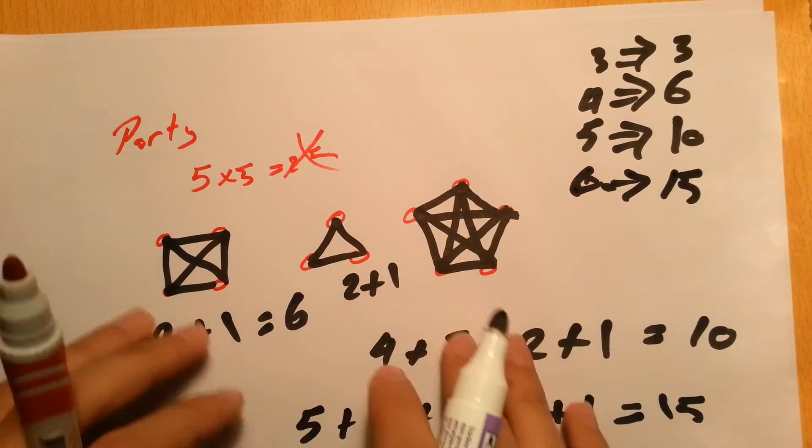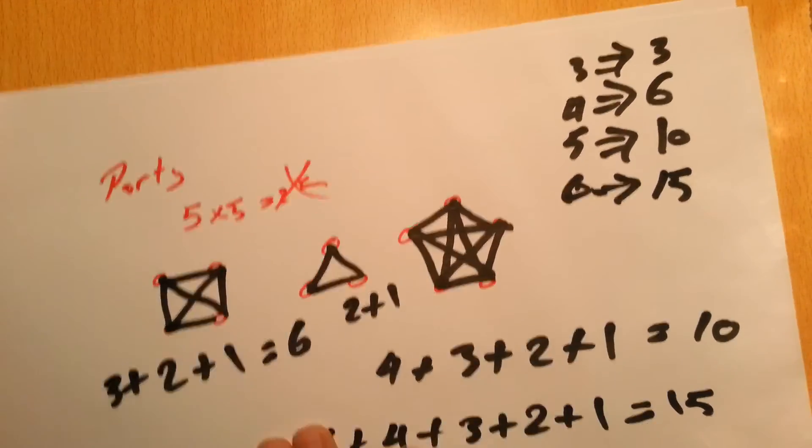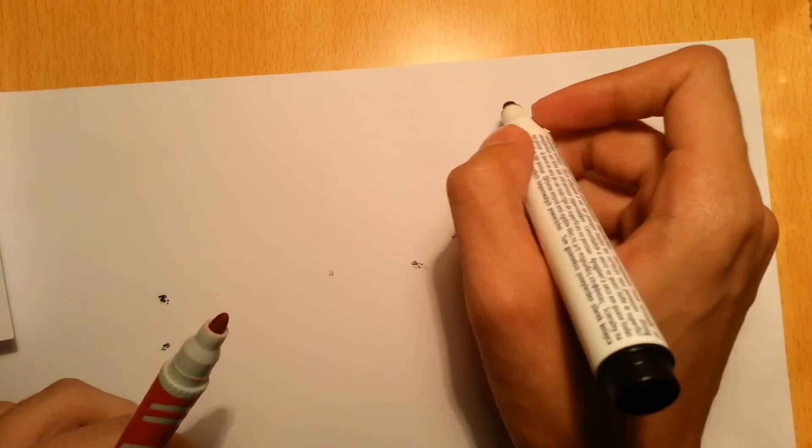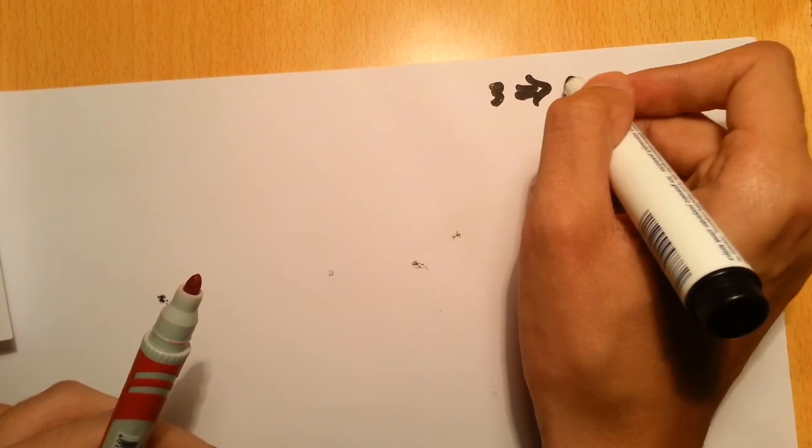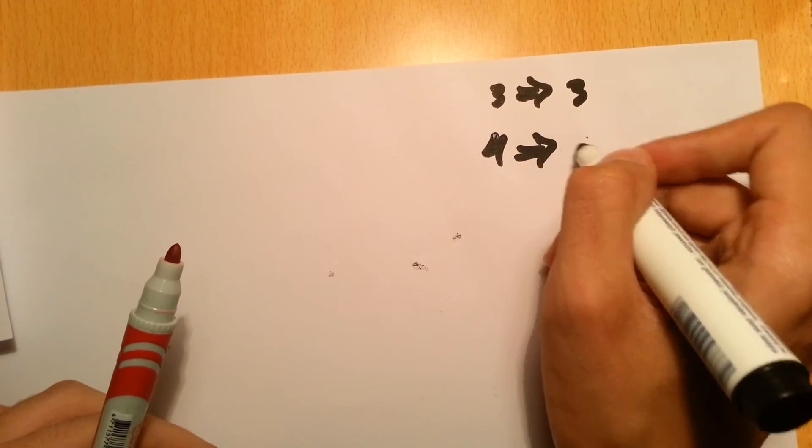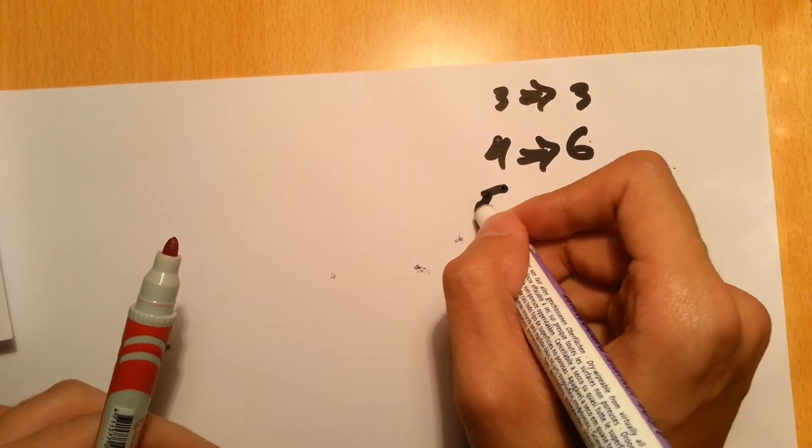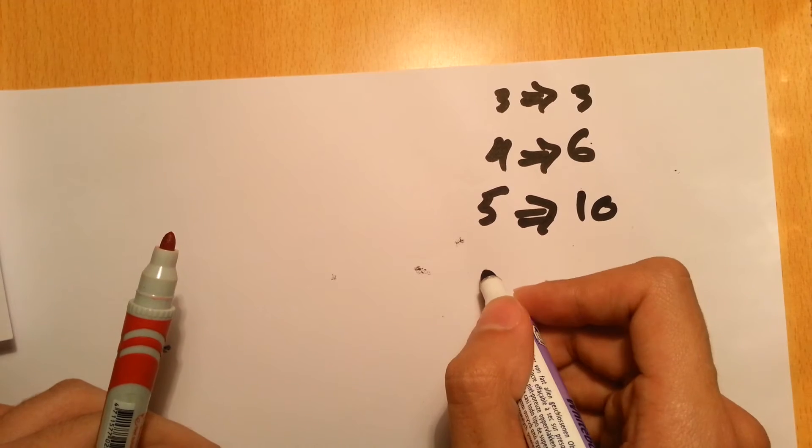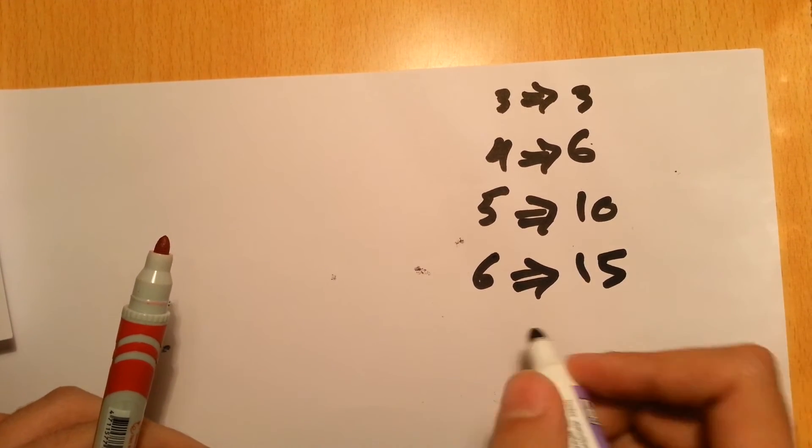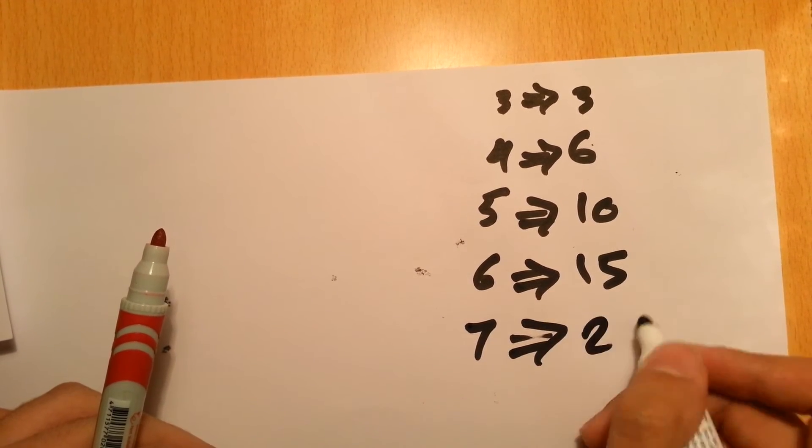But if you were asked to give an equation, how are we going to put an equation for this one? It's easy. So let's say again we had three gives three, four gives six, five gives ten, and six gives fifteen. Definitely seven will give twenty-one. So let's try to think.